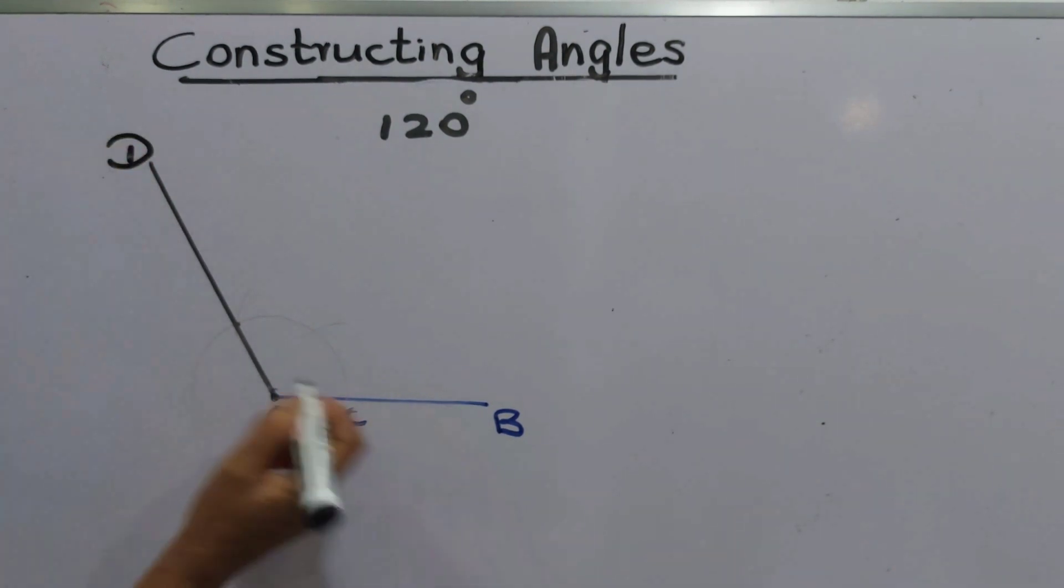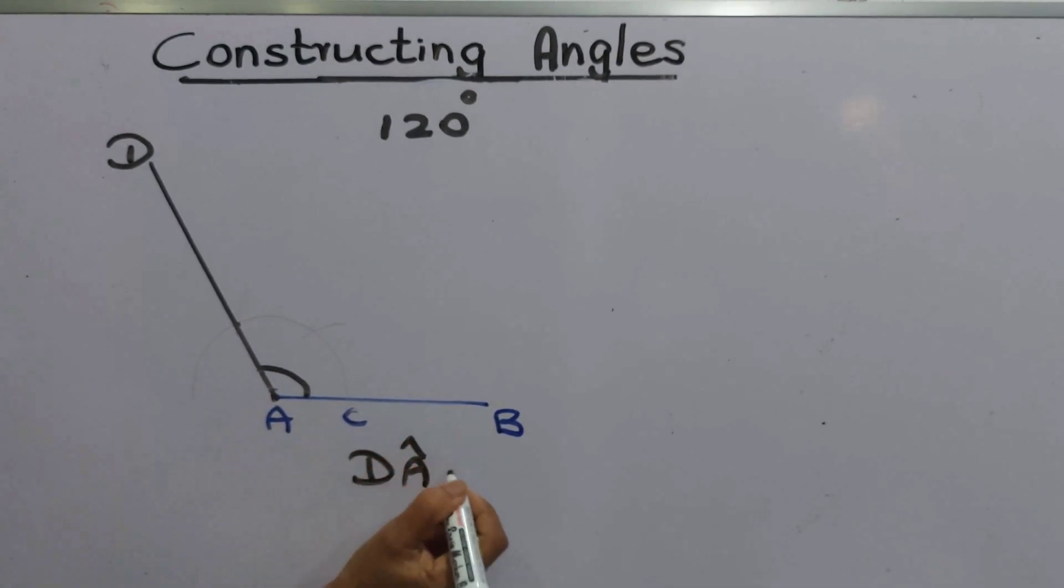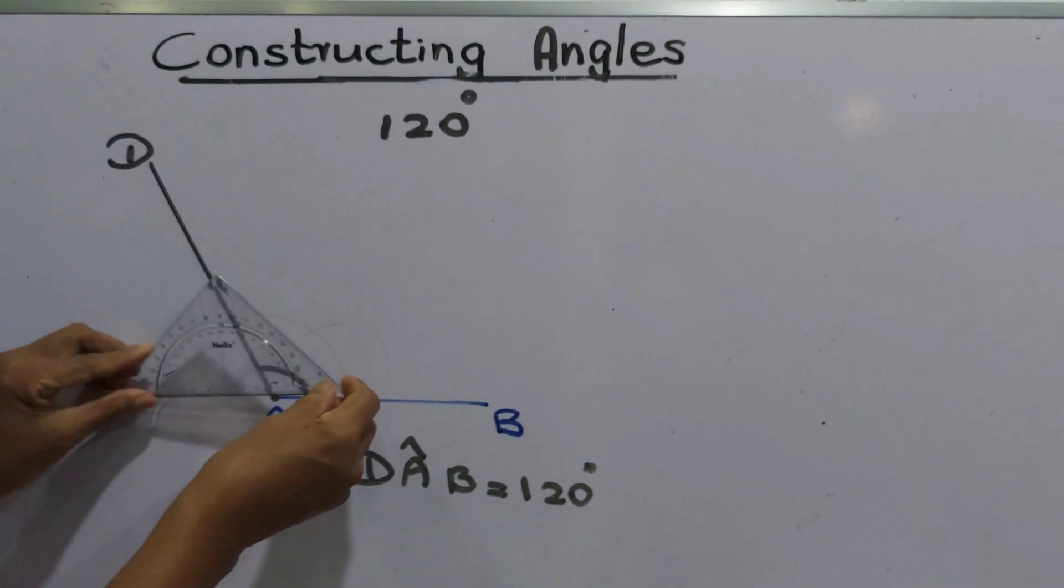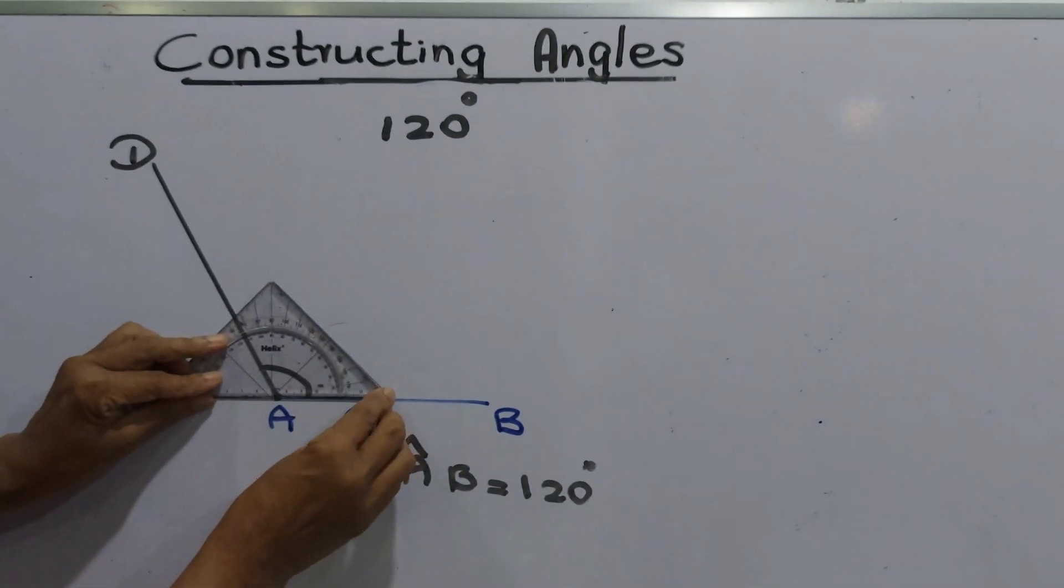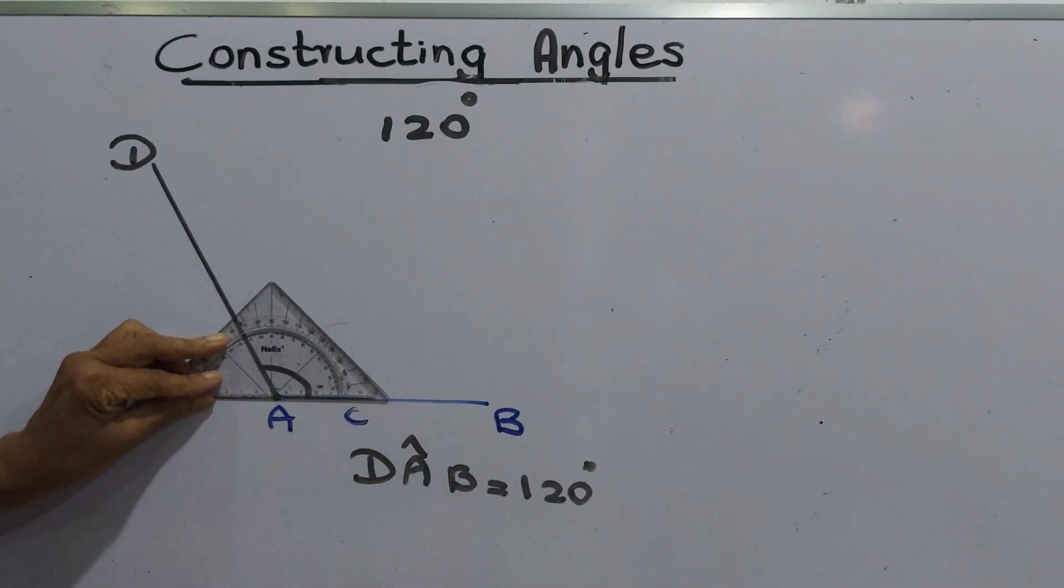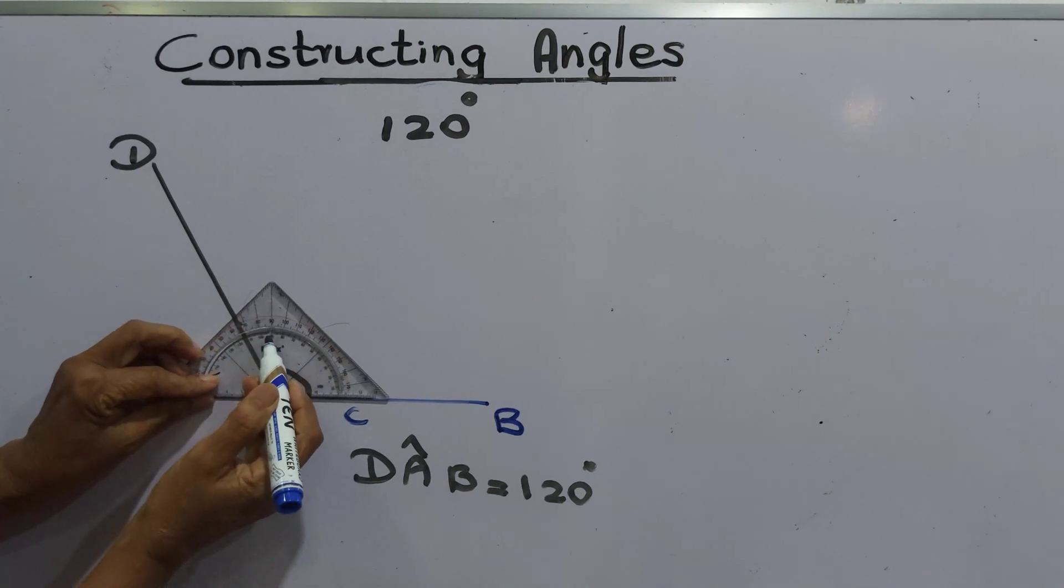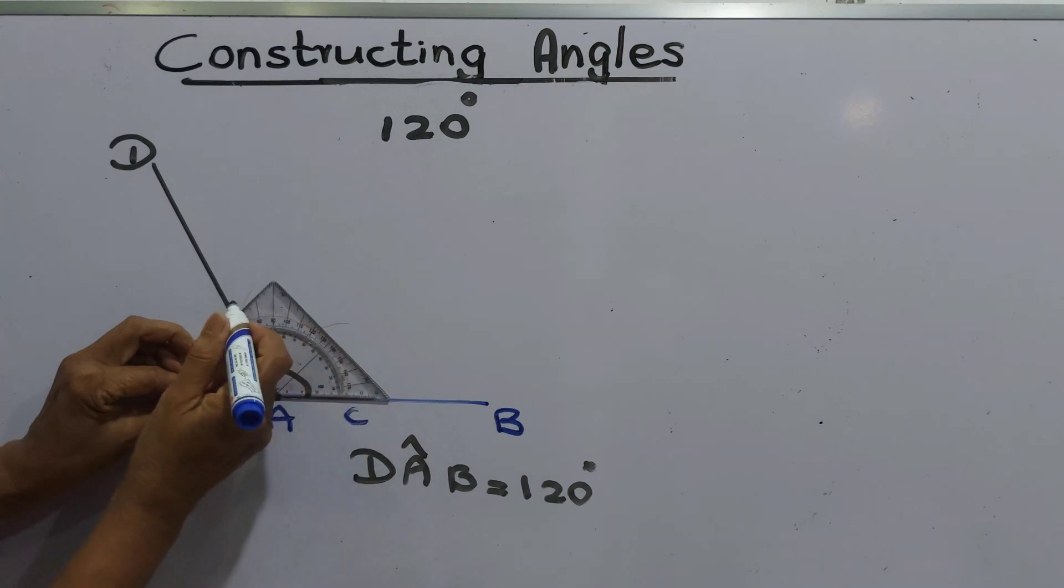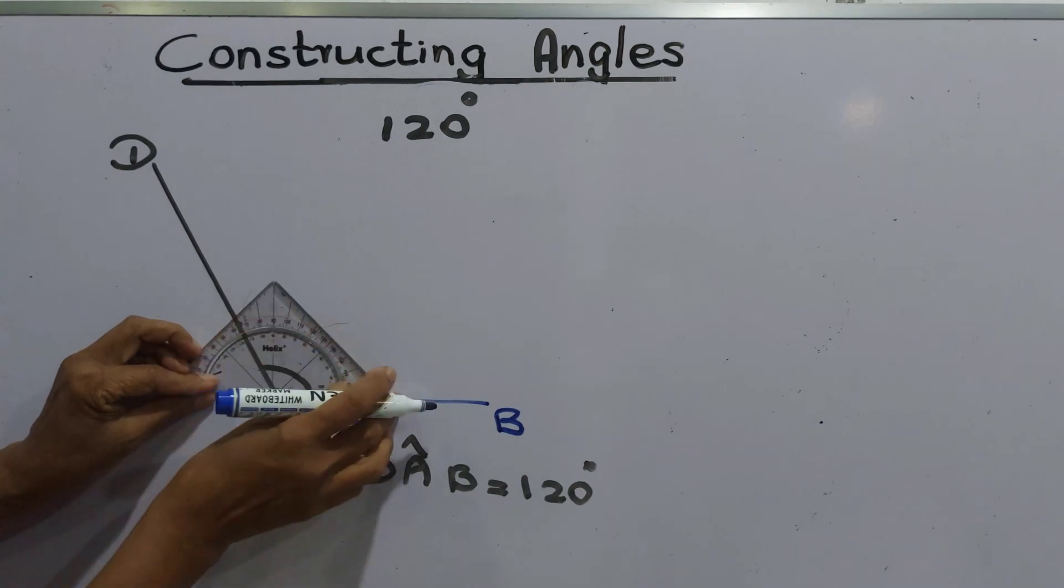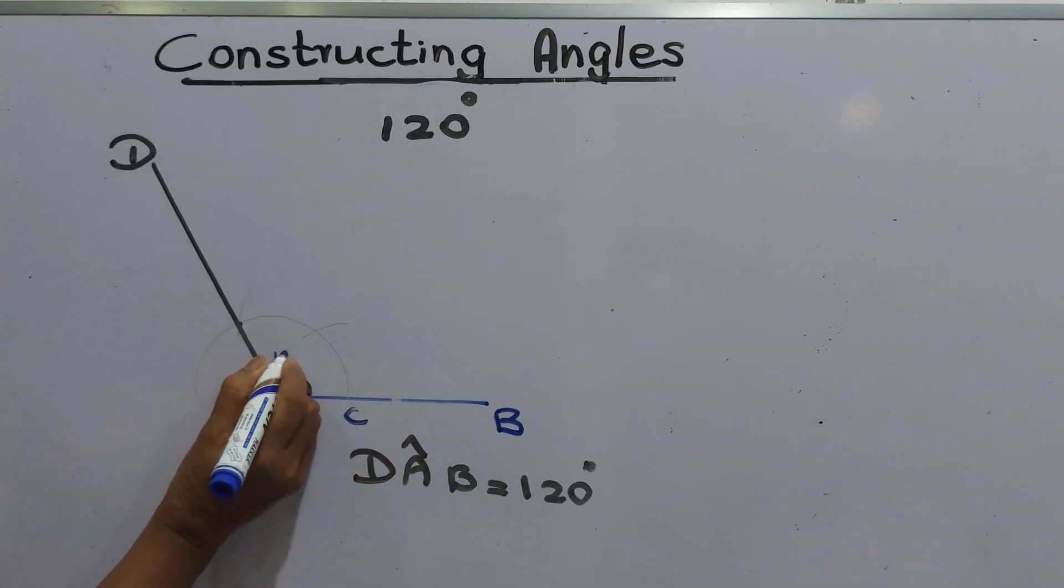Angle DAB, that is 120 degrees. We can measure that angle. Take the protractor, keep the protractor zero line on AB line. 90 degrees from here, it tells that is 120 degrees.